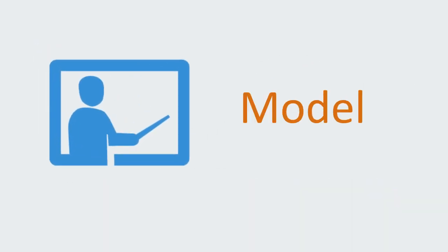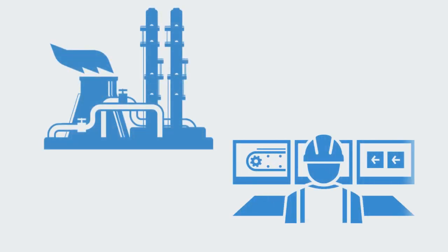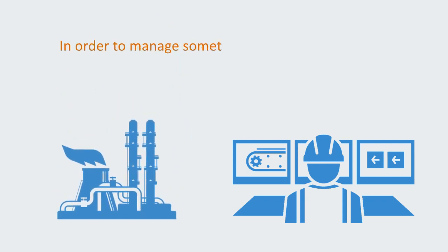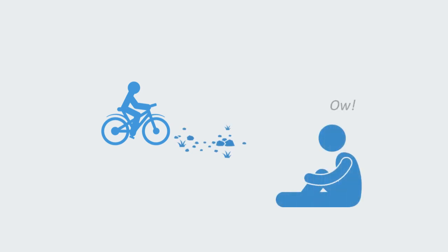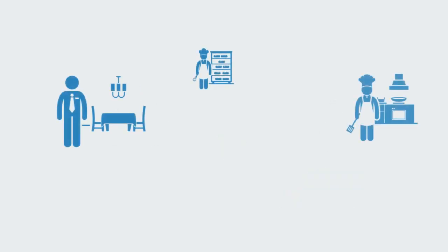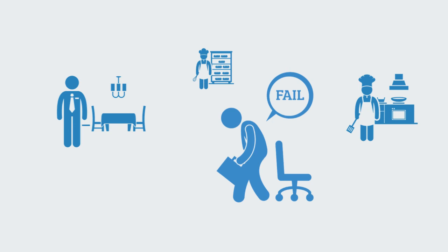Firstly, we need some kind of model of the system we wish to manage. You can't begin to try and manage something if you don't know whatever it is you wish to manage. In order to manage something, we have to understand the system to some extent, and knowing the system means building up a model of it. The first time we get on a bike and try to manage the cycle, we fall off, because we don't really understand how that system behaves. If you were sent in to manage a busy restaurant tomorrow without any experience of it, the outcome would almost certainly be a failure, because you have no model for how that system operates.